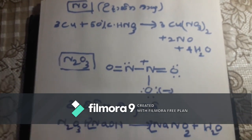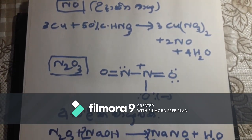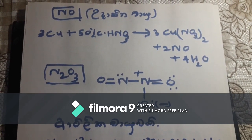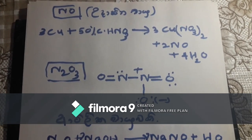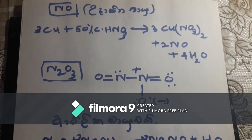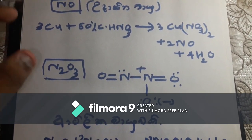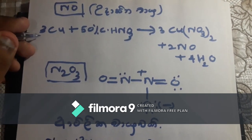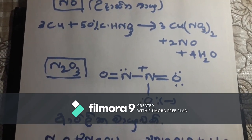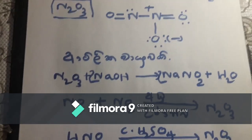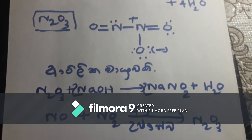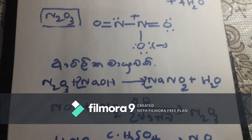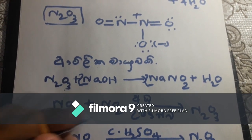Oxide — in NO, in NO. This is the view of N2O3, which is known as sodium hydroxide. Sodium nitride and nitrogen dioxide.